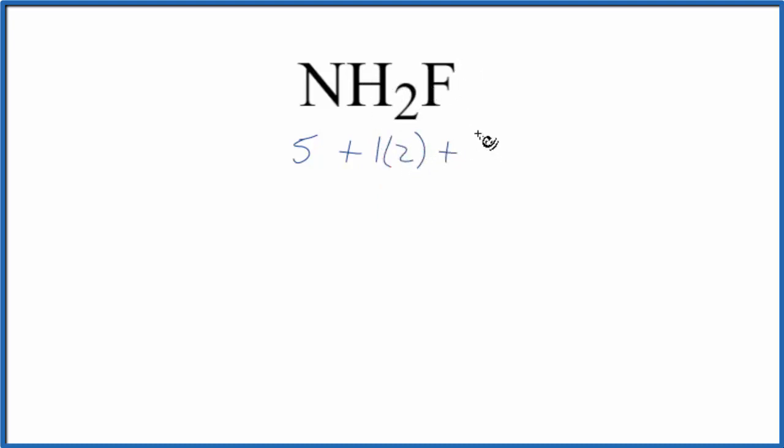And then fluorine, group 17, 7 valence electrons. So we have a total of 14 valence electrons for the NH2F Lewis structure.